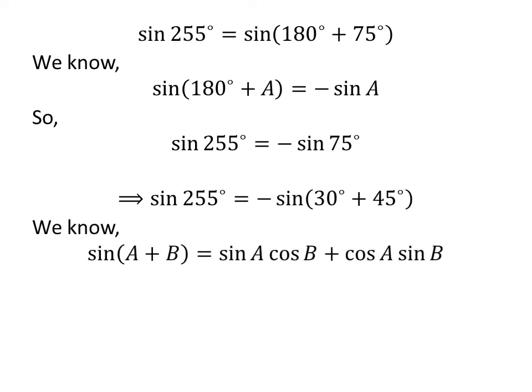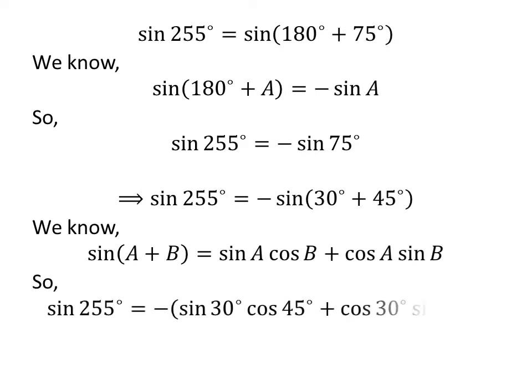We know that sine of A plus B is equal to sine of A times cosine of B plus cosine of A times sine of B. Applying this identity gives us: sine of 255 degrees is equal to minus sine of 30 degrees times cosine of 45 degrees plus cosine of 30 degrees times sine of 45 degrees.